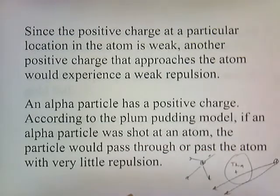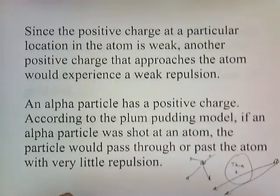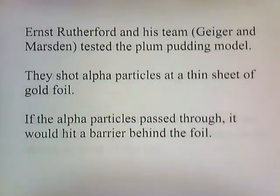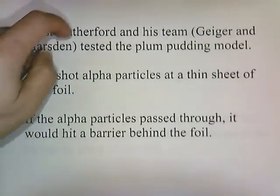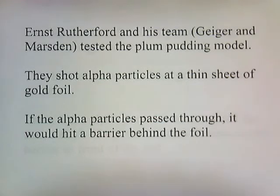If, on the other hand, the positive charge were concentrated, there would be a greater degree of repulsion. Ernst Rutherford and his team — two gentlemen named Geiger and Marsden — tested the plum pudding model. Geiger was the guy who invented the Geiger counter. These three scientists, with Rutherford leading, did a series of experiments and shot alpha particles at a thin sheet of gold foil.